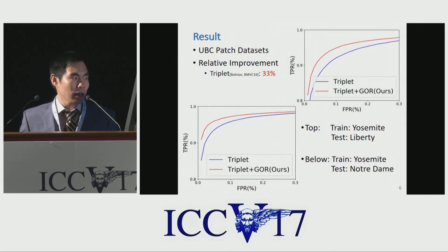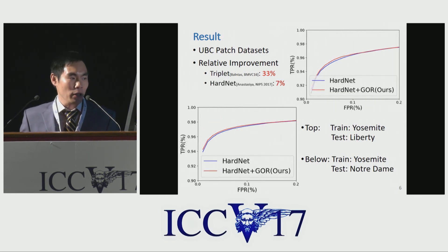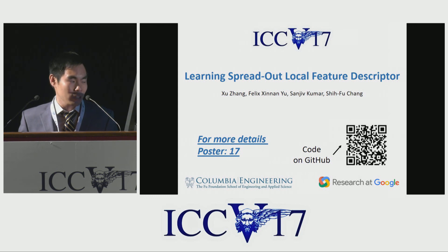We show our results on the UBC patch dataset. Comparing to the baseline triplet loss, our regularization achieves a relative improvement of 33%. Comparing to the very recent state-of-the-art work HardNet, our new regularization also achieves an improvement of 7%. Our code is available on GitHub. For more details, please come to our poster at number 17. Thank you so much.